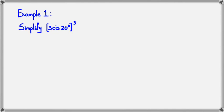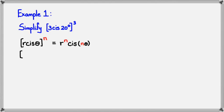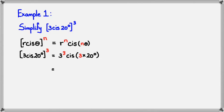Here's our first example: we're going to simplify (3 cis 20°) to the power of 3. Writing down De Moivre's Theorem as a reminder — if we have 3 cis 20° to the power of 3, then this equals 3 to the power of 3, cis (3 × 20°). Simplifying: 3 cubed is 27, and 3 times 20 is 60, so we get 27 cis 60°.